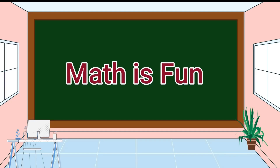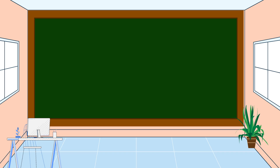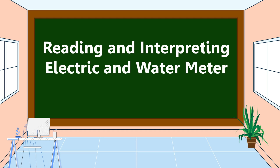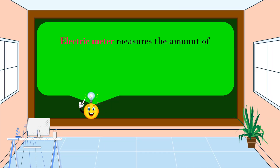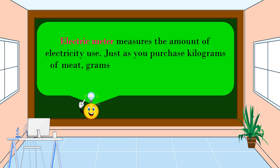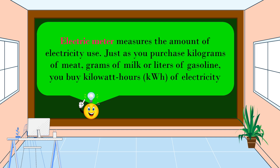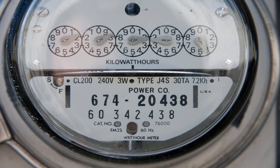Hello everyone, welcome to Math is Fun. Our lesson for today is all about reading and interpreting electric and water meter readings. An electric meter measures the amount of electricity used. Just as you purchase kilograms of meat or liters of gasoline, you buy kilowatt-hours of electricity.